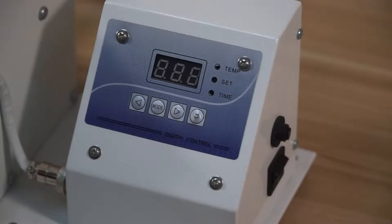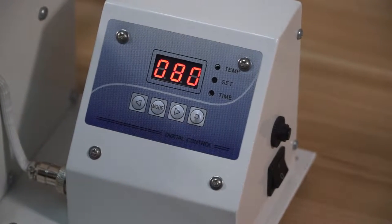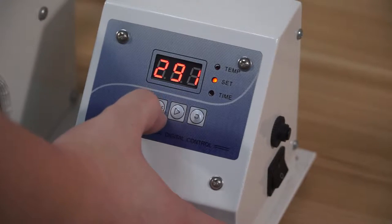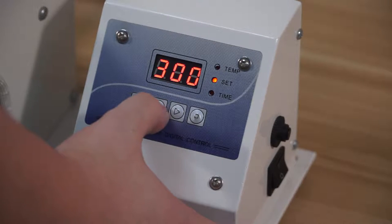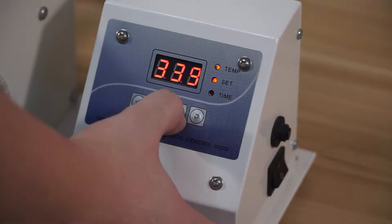Okay, first step, turn on the machine. And secondly, set the printing temperature. One should be 300 Fahrenheit degrees and the other one should be 330 Fahrenheit degrees.